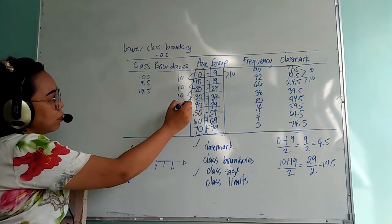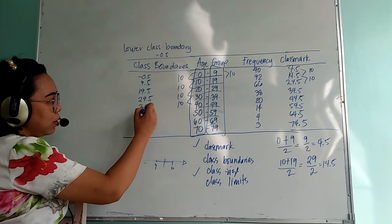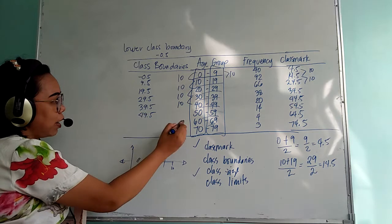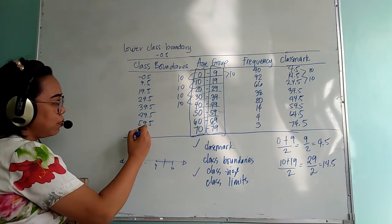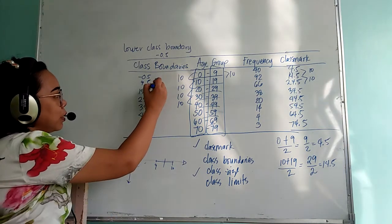19.5, 29.5, 39.5, 49.5, 59.5, and this is 69.5. Now we go to the upper limits.